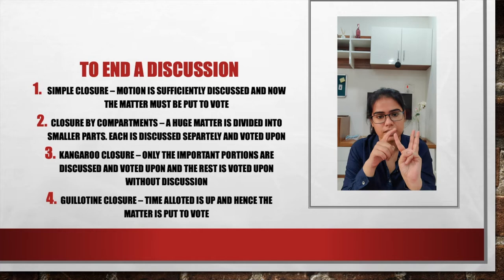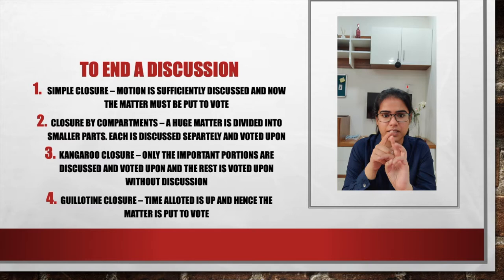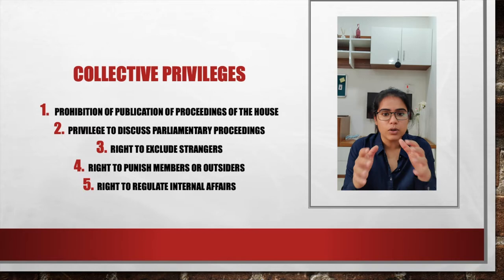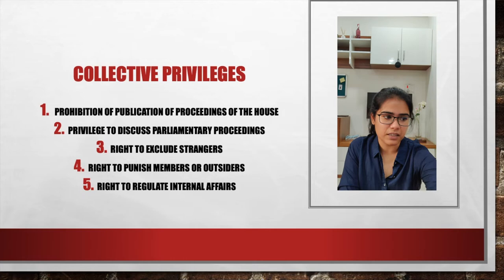So there are 3 ways to initiate: substantive, substitutive, and subsidiary - where subsidiary includes ancillary (adding), superseding (subtracting), and amendment (changing). And there are 4 ways to end a discussion: simple closure, closure by compartment, kangaroo closure, and guillotine closure. These are the generic terms. Now let's talk about specific terms.